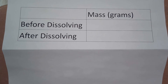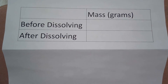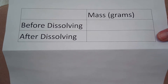Our question to investigate today is: does the mass change when sugar is dissolved in water? You're going to want to record your data as we do the lab together. Here's a rough draft of the data table for you to use. You want to record the mass in grams of sugar and water before dissolving, and then the mass in grams after the sugar has been dissolved in the water.